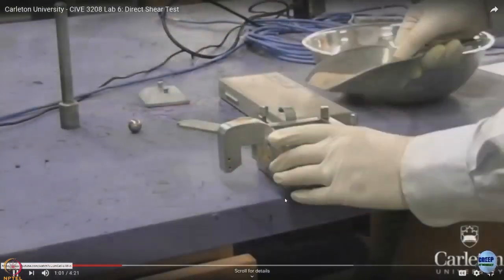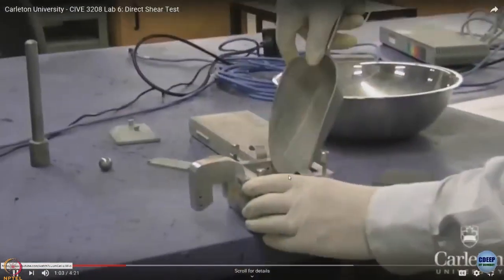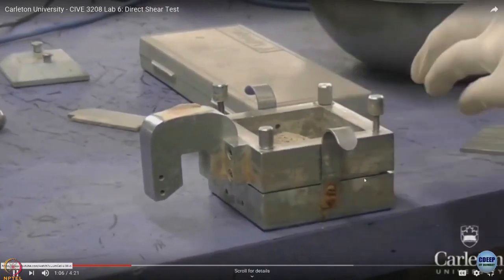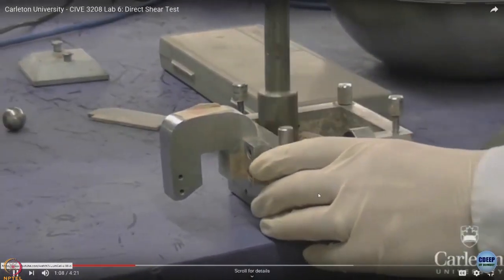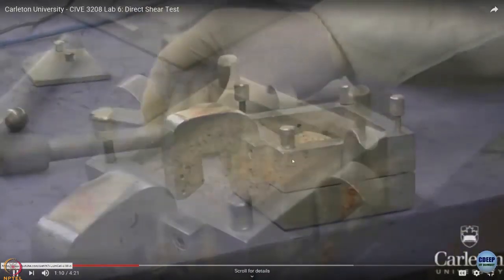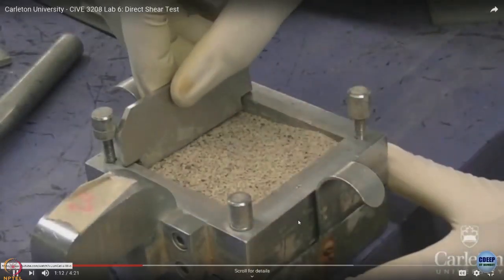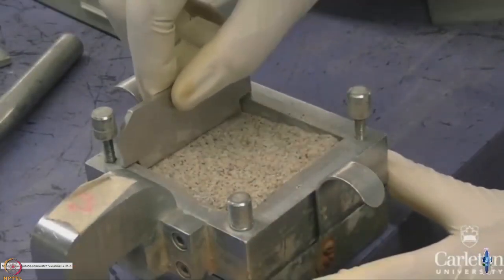This is the cleavage through which the shearing takes place because this is one half and this is the upper half of the sample. So this is the sample preparation.